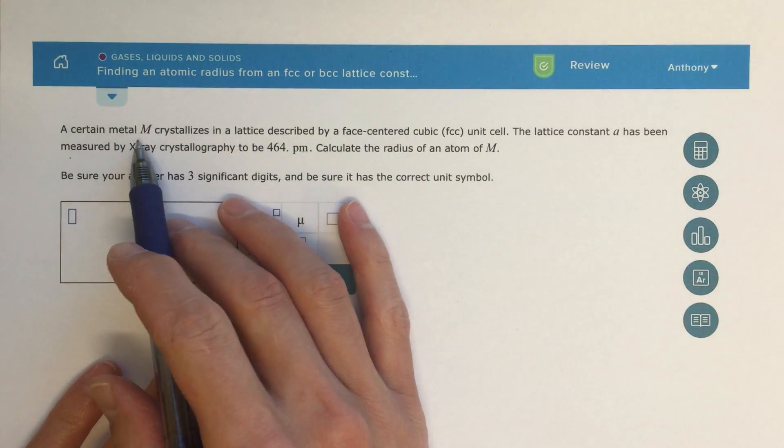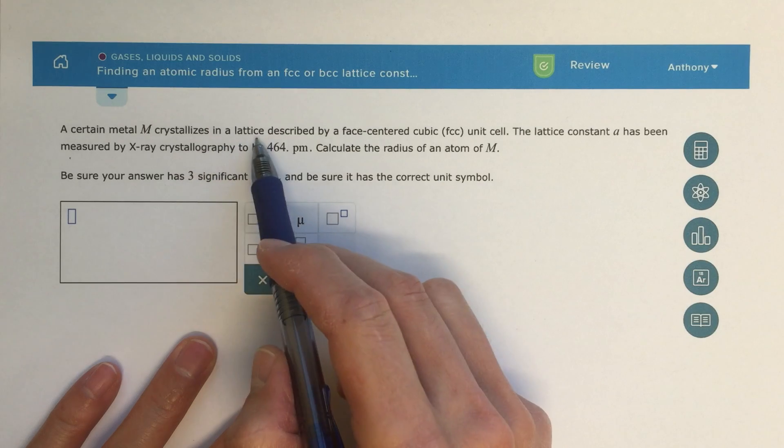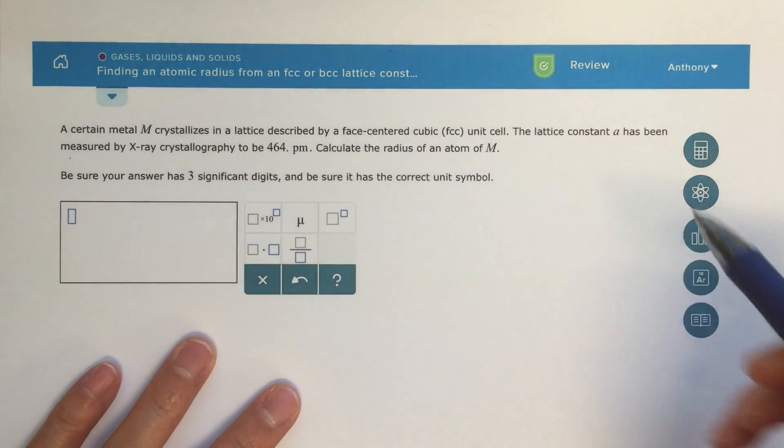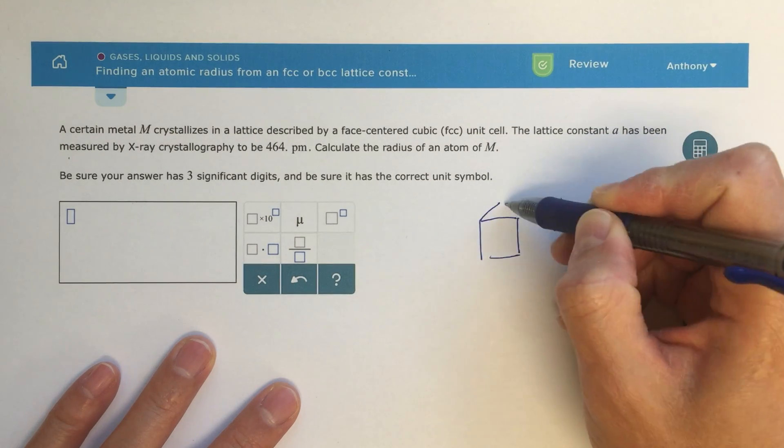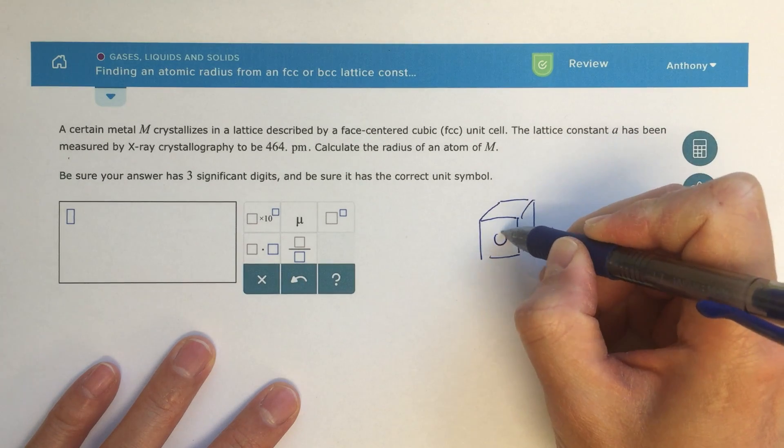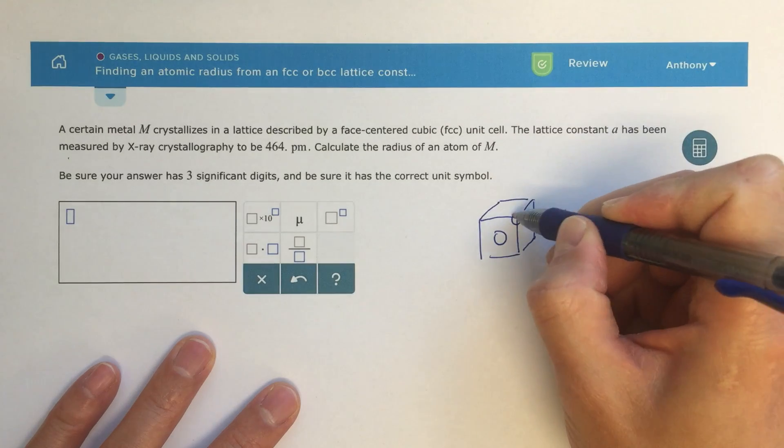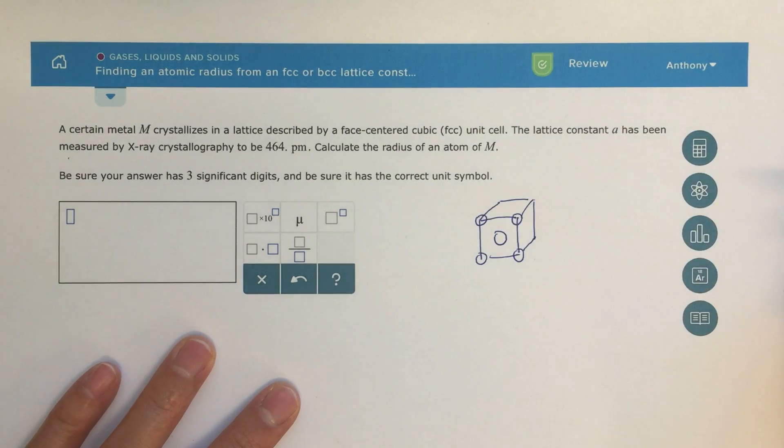This tells us that a certain metal M crystallizes in a lattice described by a face-centered cubic unit cell. So if we draw a picture of that, I've got my unit cell here, and face-centered means I would have atoms in the middle of the face. On each edge I would have an atom, and then in the middle I would also have an atom.